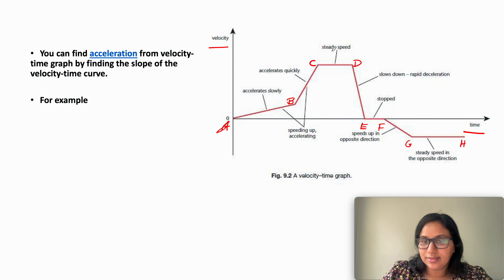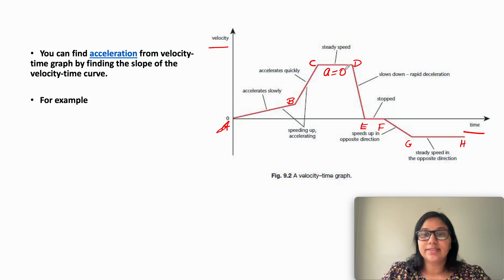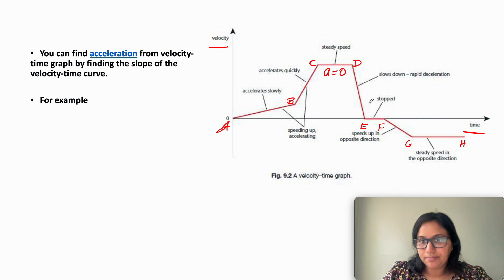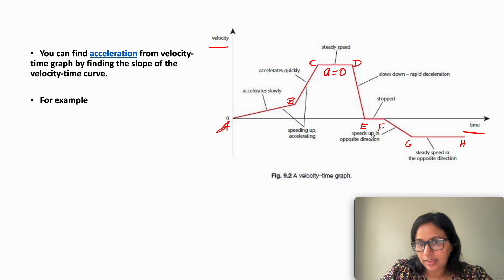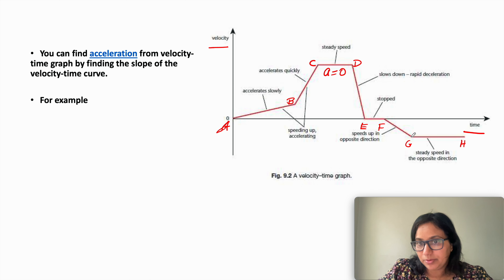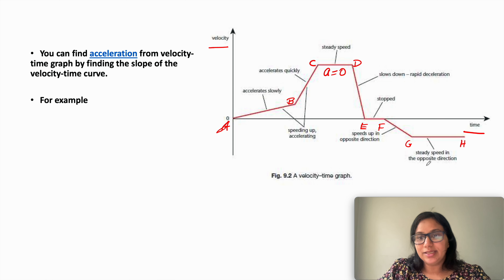From C to D it moves at constant speed, meaning the acceleration is zero. From D to E it slows down rapidly — that is rapid deceleration. From E to F the object is completely stopped. From F to G it speeds up again, but in the opposite direction — that is very important.